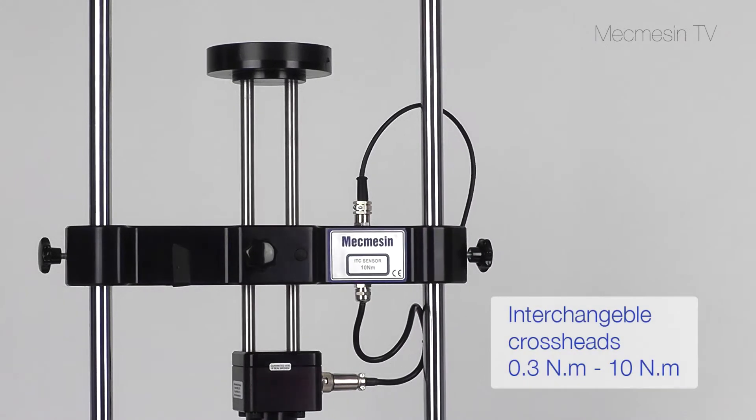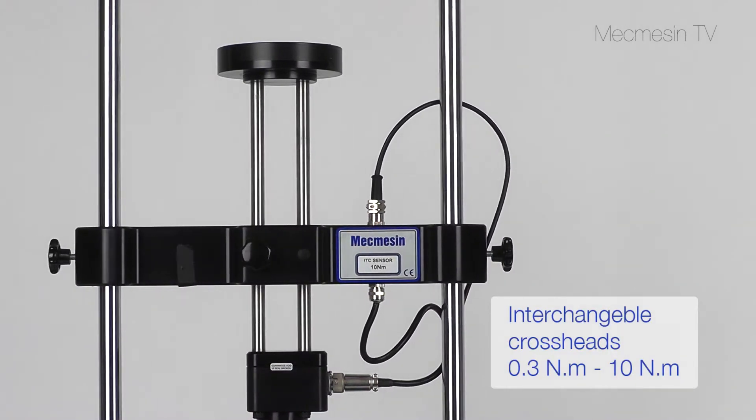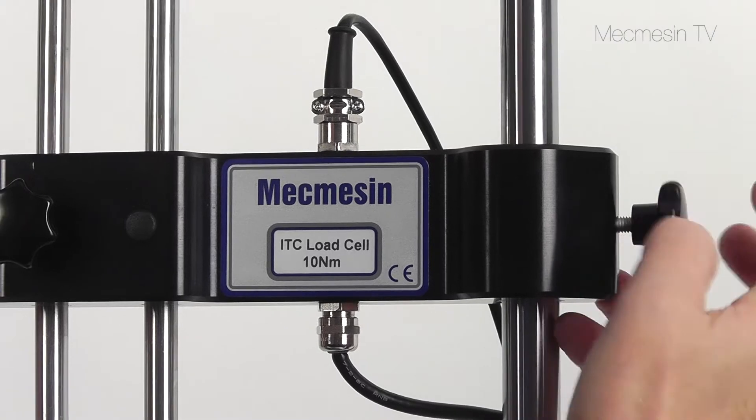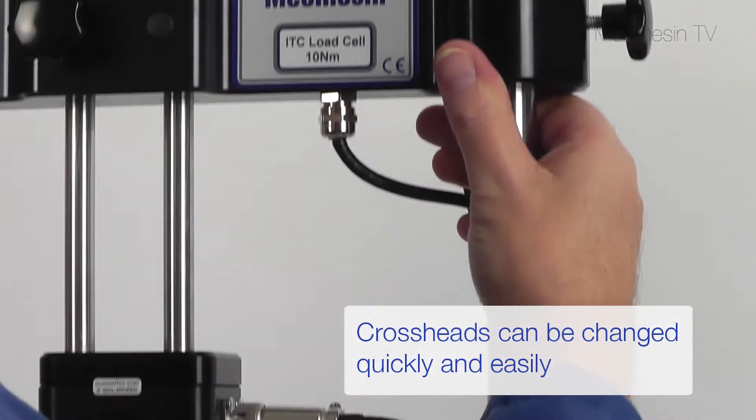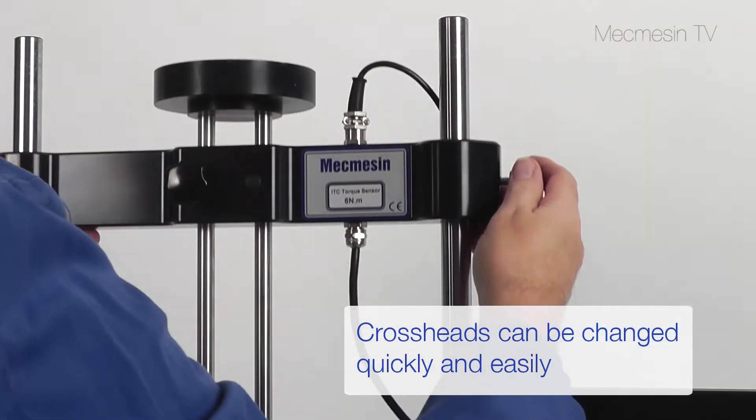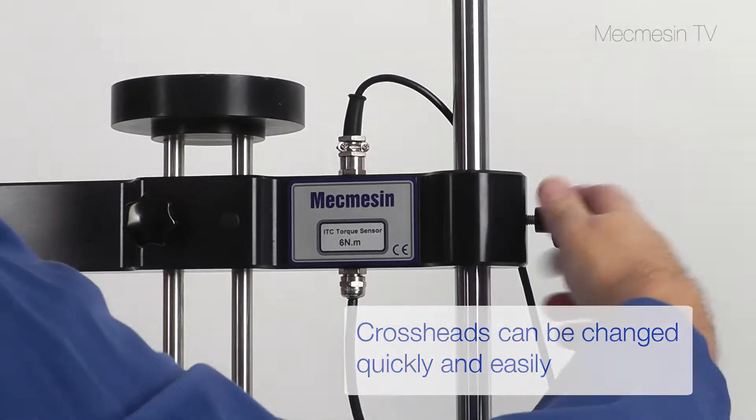Five different torque sensors are available for low to mid-range torque measurement. The rigid twin-column test frame accommodates the interchangeable precision torque sensors. Swapping the crosshead takes just a few seconds and no special tools are needed.